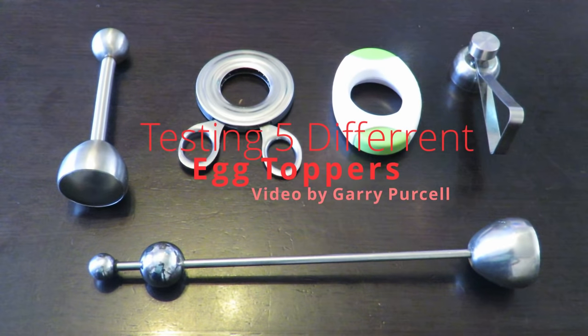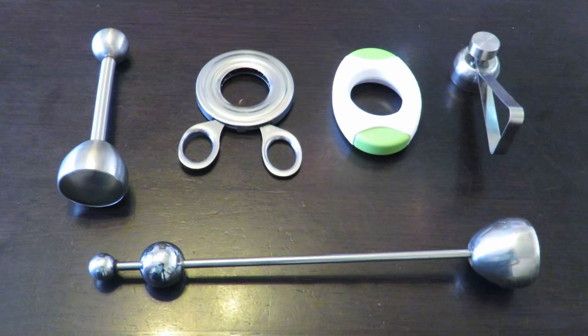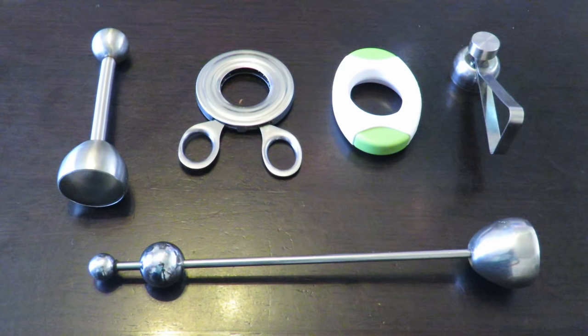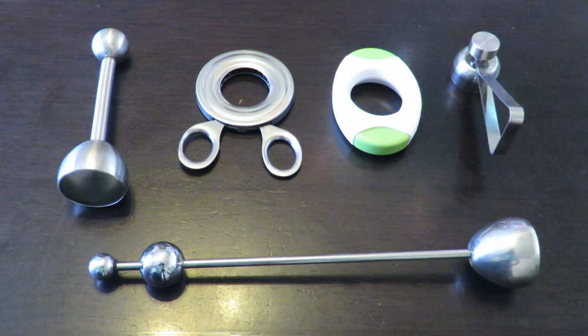Good day. Today we're having a look at these egg toppers or egg cutters. They're designed for one purpose only, and that's to cut the shell of a soft-boiled egg. You get a nice knife in there and slice it off to get a nice clean cut.